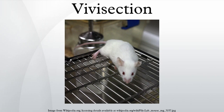Human vivisection: Unit 731, a biological and chemical warfare research and development unit of the Imperial Japanese Army, undertook lethal human experimentation during the Second Sino-Japanese War. In Mindanao, Muslim prisoners of war were subjected to various forms of vivisection by the Japanese, in many cases without anesthesia. Nazi human experimentation involved medical experiments on live subjects, such as vivisections by Josef Mengele, usually without anesthesia.